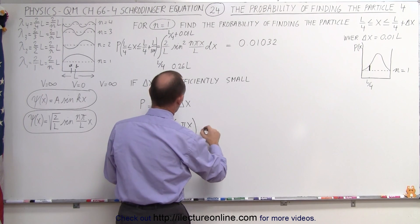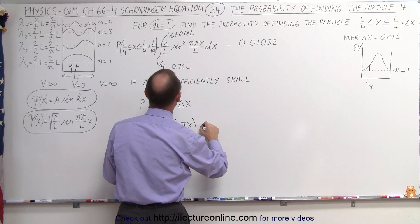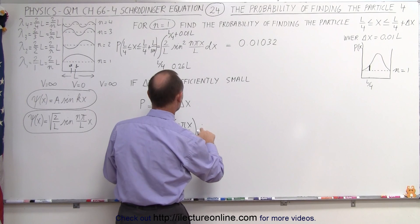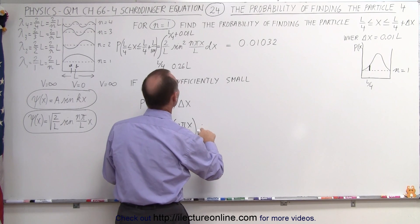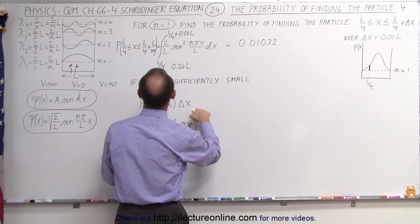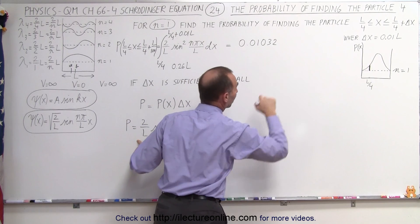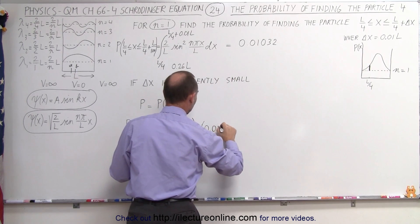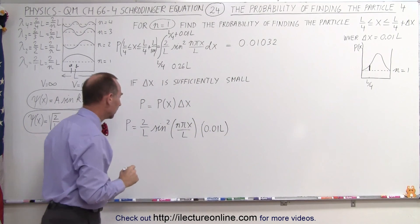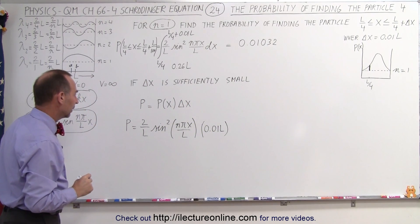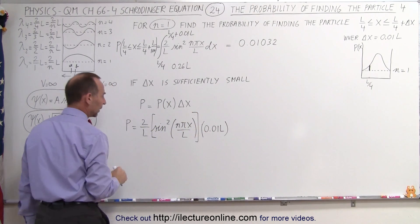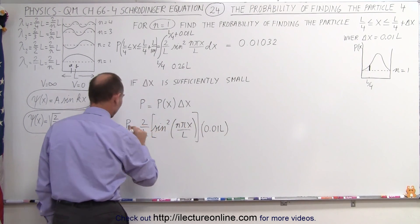And in this case, delta x was again going to be 0.01 L. So we're going to multiply this time 0.01 L. All right, we probably want to put brackets around that because this is, of course, not part of the angle. And we multiply this times this.